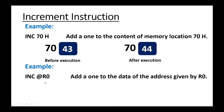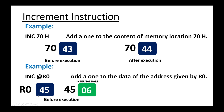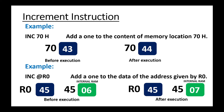Next example is INC @R0. R0 is a pointer register, so this instruction will add one to the data of the address given by R0. R0 is having 45, so at location 45, the value 06 is stored — this is the situation before execution. But after executing this instruction, the content of that location pointed by R0 will be incremented by one, so it becomes 07.